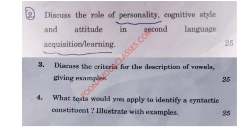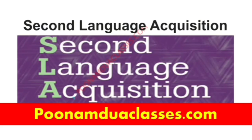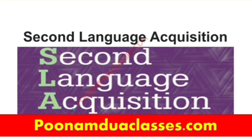Question two discusses the role of personality, cognitive style, and attitude in second language acquisition, sometimes called L2. L2 is the process by which people learn a second language. There are many factors that affect learning, and one of these is personality. If one is shy, timid, or introverted, the person is less likely to understand concepts compared to an extroverted, amiable, friendly kind of person.